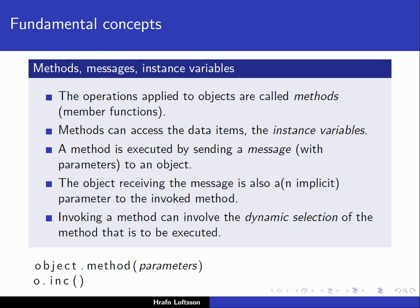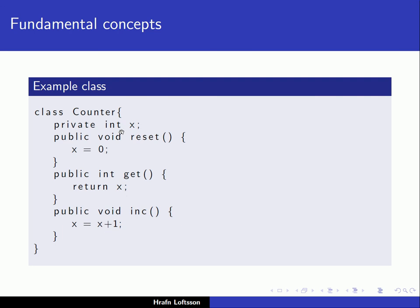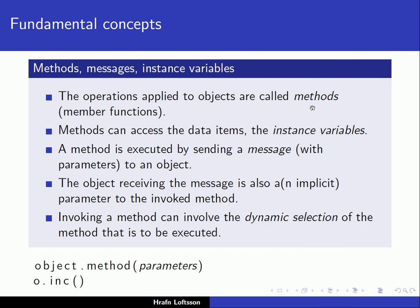Continuing with fundamental concepts of object-oriented programming: we have methods, messages, and instance variables. The operations applied to objects are called methods — also called member functions. The methods can access the data items, the instance variables. In our counter class, the instance variable is x, and the member functions — reset, get, and inc — are called methods in OOP terminology. The methods can access the data items; for example, the method get can access the instance variable x.